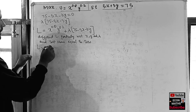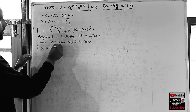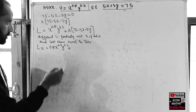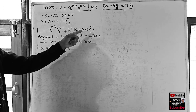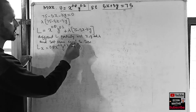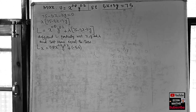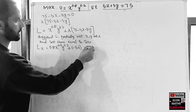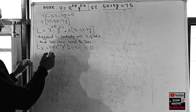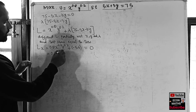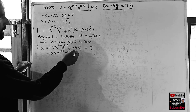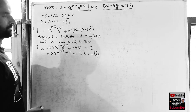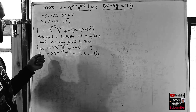Differentiating L partially with respect to x: the term x^0.8 becomes 0.8 * x^(0.8-1) = 0.8 * x^(-0.2), while y^0.2 remains unchanged. The lambda*75 term gives 0, and lambda*(-5x) gives -5*lambda. Setting equal to zero: 0.8 * x^(-0.2) * y^0.2 = 5*lambda. Let this be Equation 1.